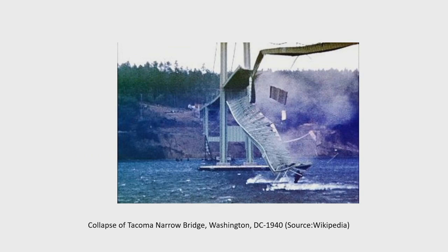The collapse of the Tacoma Narrows suspension bridge occurred in 1940 in Washington DC. This bridge started vibrating due to wind action and the torsional mode was excited; the wind fed energy to the system and the amplitude kept increasing, ultimately leading to collapse. This phenomenon is due to aerodynamic effect known as flutter. The bridge was so slender that the designer could not understand that the slenderness would cause flutter failure; ultimately the bridge was reconstructed with stiffening.